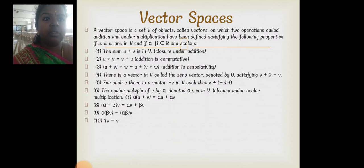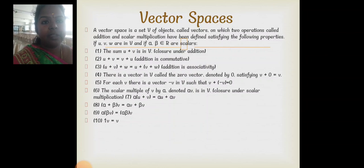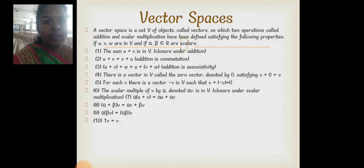This is the formal definition for a vector space. A vector space is a set V of objects called vectors on which two operations — addition and scalar multiplication — have been defined, satisfying the following properties. If U, V, W are in V and alpha and beta are scalars in R, then all ten conditions must be satisfied.